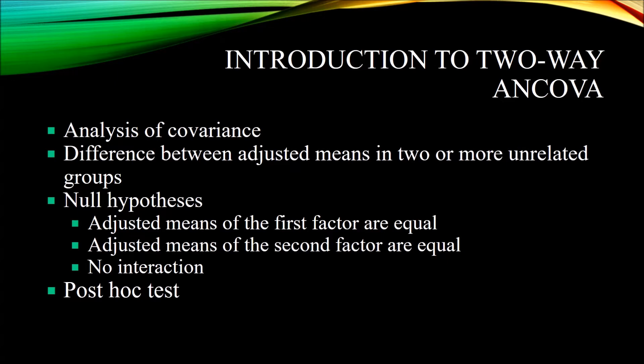We're looking at the difference between adjusted means in two or more unrelated groups across two independent variables. Comparing this to two-way ANOVA, in two-way ANOVA we're looking at just the difference between means across two independent variables. However, in two-way ANCOVA we're including at least one covariate, so we're looking at the difference between adjusted means.